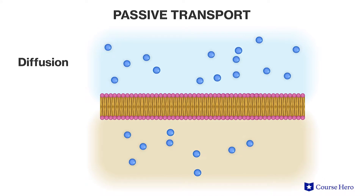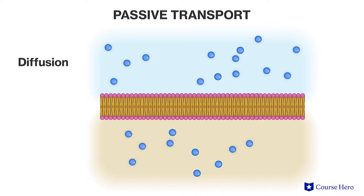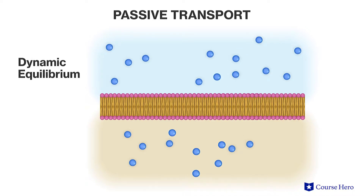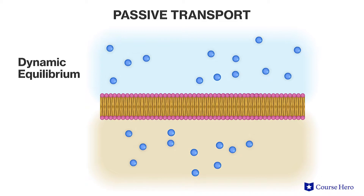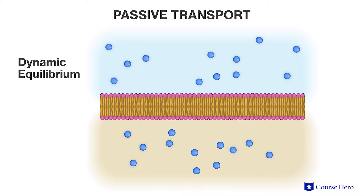The molecules move from an area of high to an area of low concentration, eventually leading to a state of dynamic equilibrium, where the concentration of molecules is the same on both sides of the membrane. In living systems, the cell membrane and other body control systems can operate to prevent equilibrium from being established, effectively maintaining a concentration gradient indefinitely.